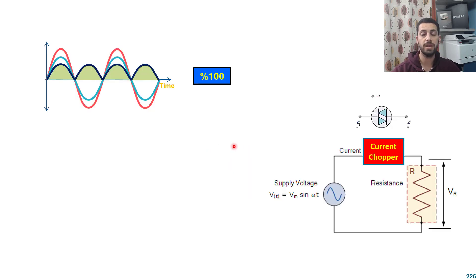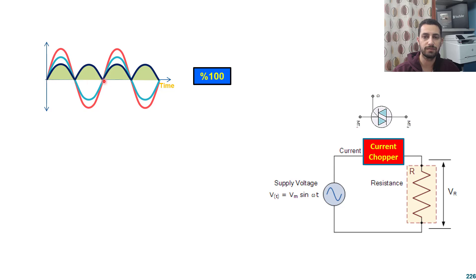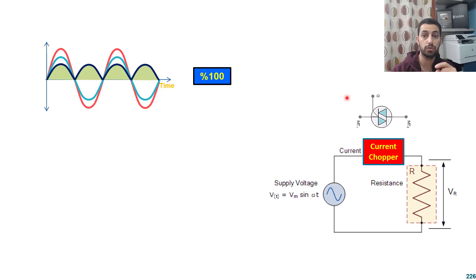We will cover the same example: we have an AC supply delivering current and energy to a load, but I want to chop that current to control the energy delivered to the load — controlling speed, heat, or light. This time I choose the triac. The triac can control both positive and negative cycles. If triggered exactly at the zero crossing — once the polarity switches — I turn it on by giving a pulse to the gate.